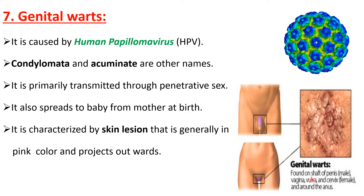Genital warts are found on the soft tissue of the penis in males, and on the vagina, vulva, and cervix region in females, as well as around the anus. These are the major places in the body where the infection can easily spread and grow.